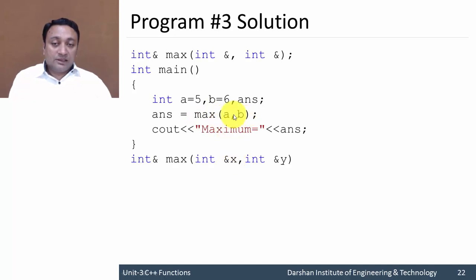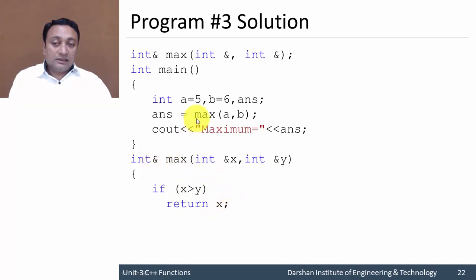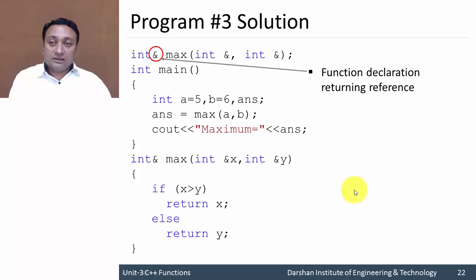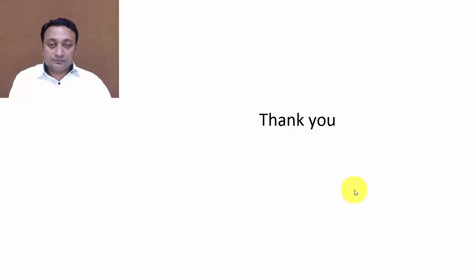The alias name for a will be x and the alias name for b will be y. If x is greater than y we return x, which ultimately returns a reference to a. Otherwise we return y, which ultimately returns a reference to b. This is how functions written with references work. Thank you.